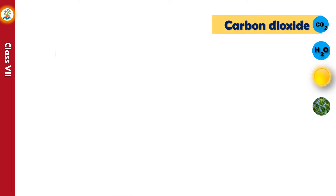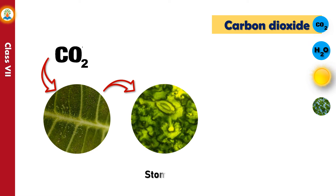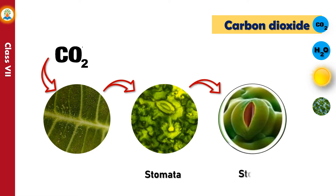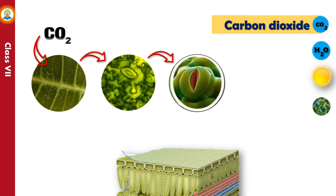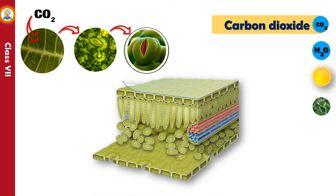Carbon dioxide present in air is taken in by plants through small openings called stomata (singular: stoma). Stomata are present in abundance on the lower surface of leaves and also help the plant to respire.